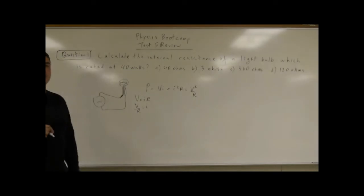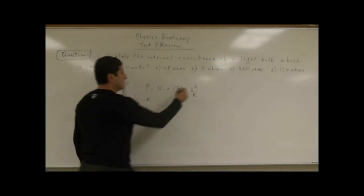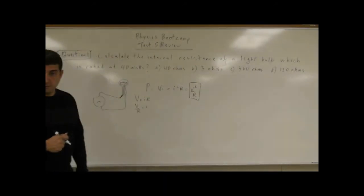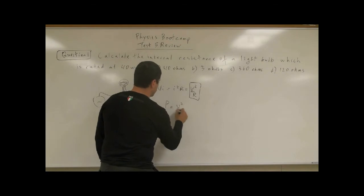And so you're going to get V² over R. The version of the equation we're going to use - we're not interested in the current in the circuit - we're going to use this version. Power is voltage squared over R.